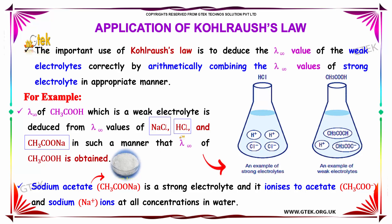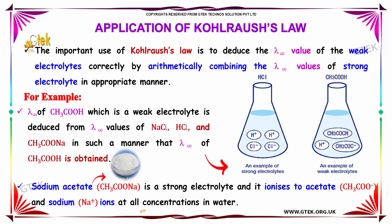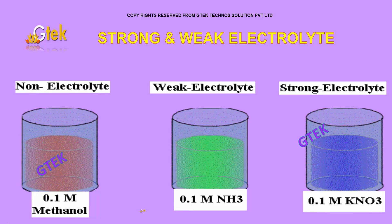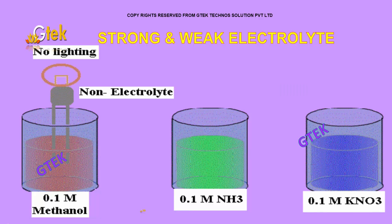Lambda infinity of CH₃COOH, that is acetic acid, is obtained in such a manner. Sodium acetate, that is CH₃COONa, is a strong electrolyte and it ionizes into acetate ions and sodium ions at all concentrations in water. This is about the strong and weak electrolyte which we are going to discuss now.